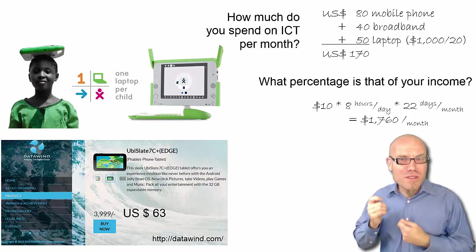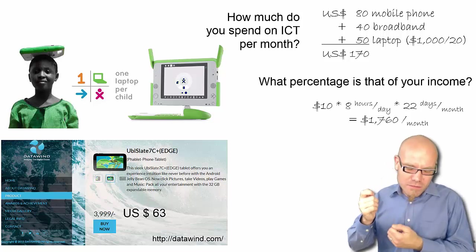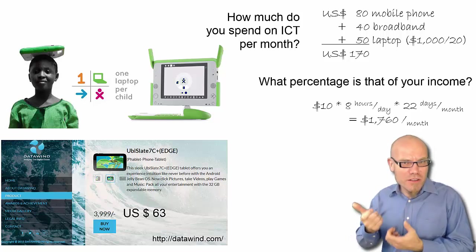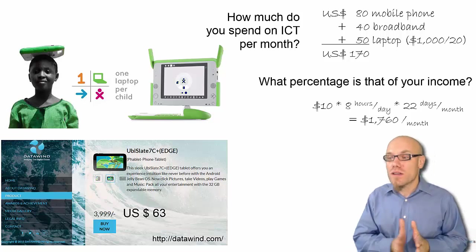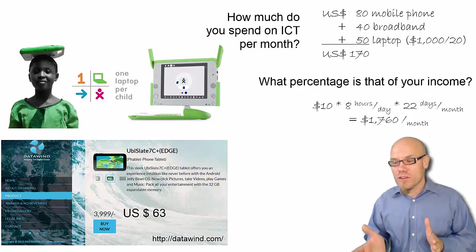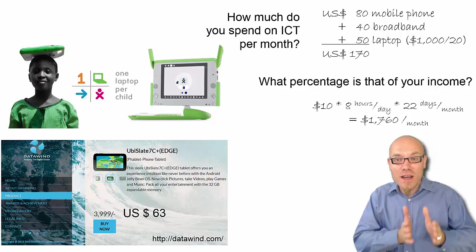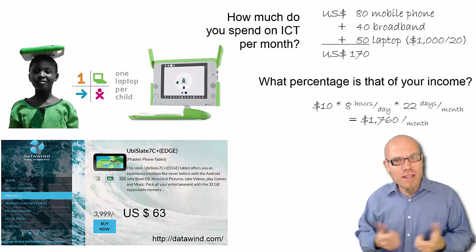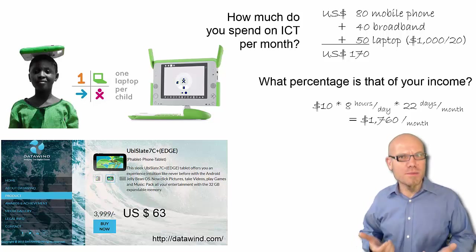So if you want to buy an access solution for $63 or $100 and you have $3 to $4 a month, you need about 25 months — two years — of saving. During those two years you cannot make one phone call, because all your ICT budget is being saved up for this investment. And then when you have this tablet or $100 laptop, you still don't have any internet traffic — you still don't have any internet connection, because you spent all your money on the hardware.